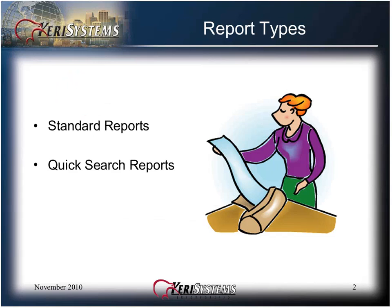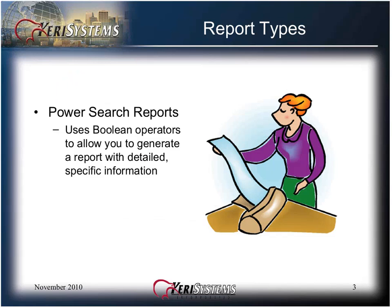Standard reports are pre-formatted reports for the most common types of data inquiries. It uses a Crystal Reports generator to create its output. Quick search reports allow you to select parameters from a list and generate a report. Power search reports use Boolean operators to allow you to generate a report with detailed specific information. Due to the complex nature of Boolean logic, power search reports are covered in a separate presentation.